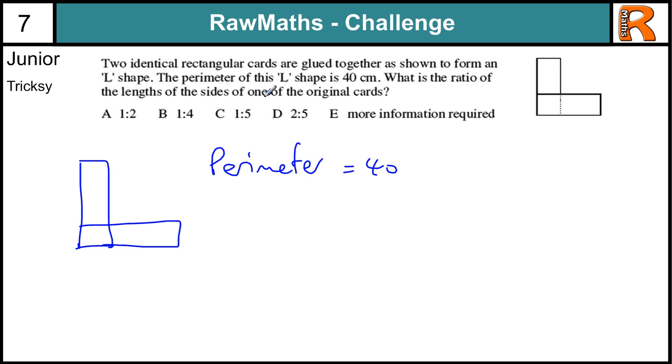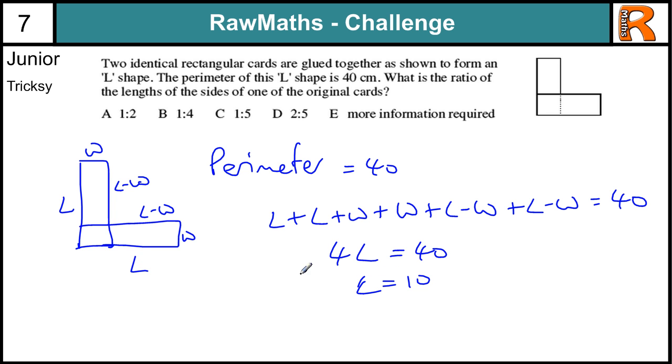What is the ratio of the lengths of the sides of one of the original cards? If we just label these up, W is the width, L is the length of the rectangle. So this is going to be L, this is going to be W, this is going to be L minus W, this is going to be L minus W. And we add all those up. L plus L plus W plus W plus L minus W plus L minus W equals 40. So L equals 10. We can work out the length of the side of this L shape, but we can't work out the width, because the Ws disappear.